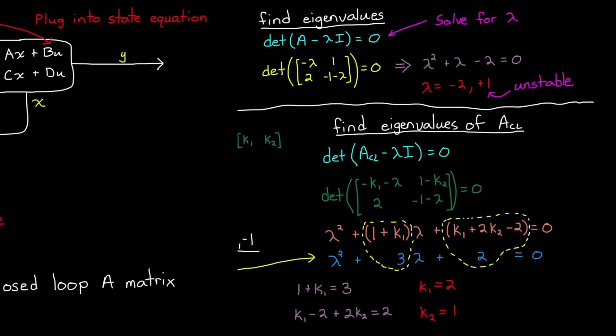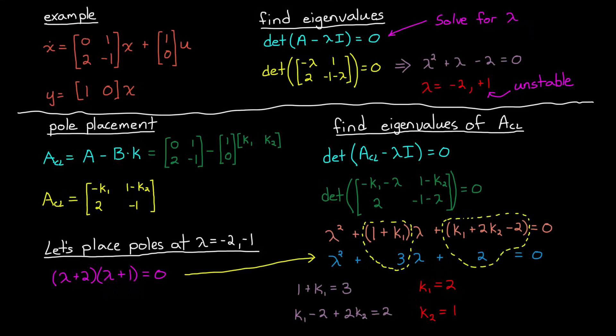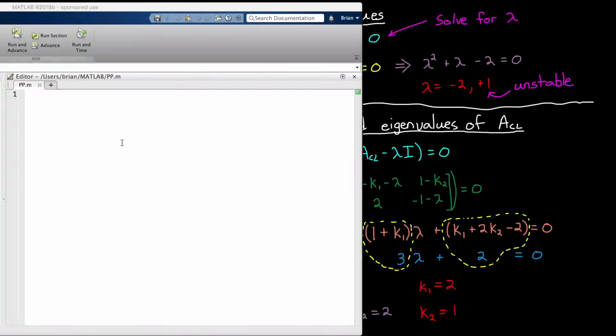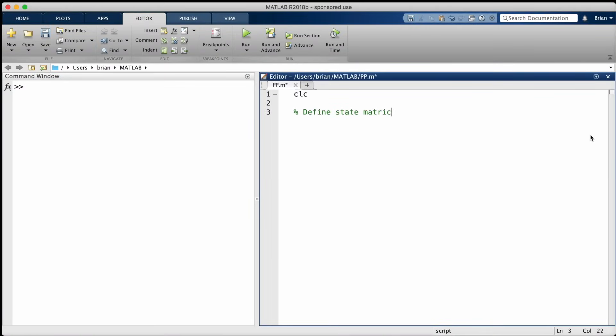Walking through an example by hand I think gives you a good understanding of pole placement and how it works. However, the math involved starts to become overwhelming for systems that have more than two states. The idea is the same, just solving the determinant becomes impractical. But we can do this exact same thing in MATLAB with pretty much a single command. I'll show you quickly how to use the place command in MATLAB by recreating the same system that we just did by hand.